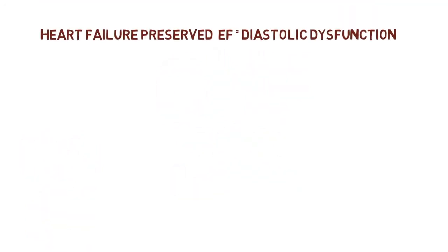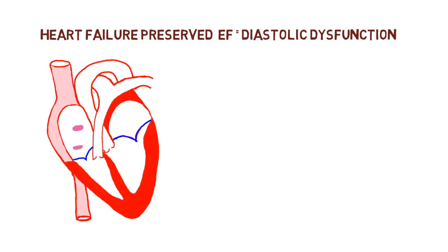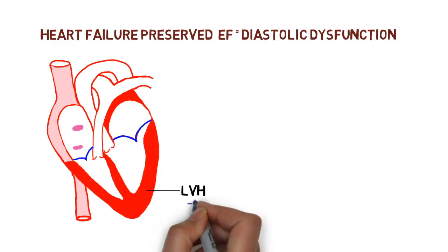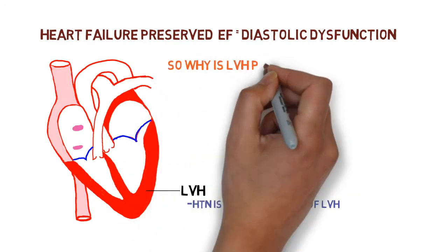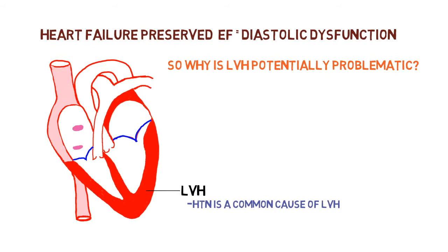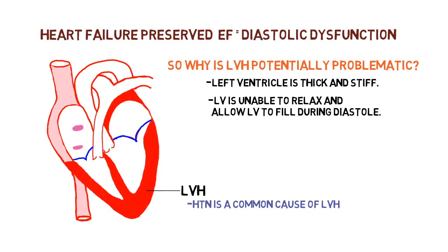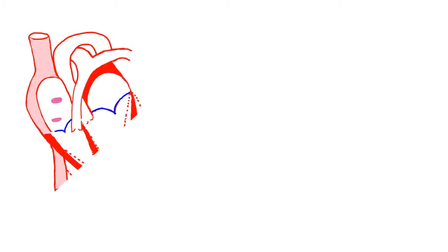Heart failure with preserved ejection fraction equals diastolic dysfunction. Here we have a left ventricle which is hypertrophied, likely due to hypertension — a common cause of left ventricular hypertrophy. LVH is problematic because the left ventricle is thick and stiff, making it unable to relax and allow for proper filling during diastole.